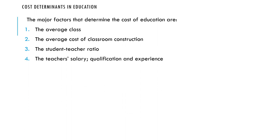We also have teacher salary, qualification, and experience. Remember, salaries differ according to the qualification and experience of teachers. Then we have school size — how large is the school? A school with 1,000 students is different from one with 200 students. If you have 1,000 students, you need to provide facilities for all 1,000, and providing equal quality for 1,000 students means you are going to spend more money than providing for 200 students. So you have to look at school size as a cost determinant.